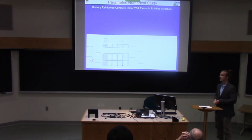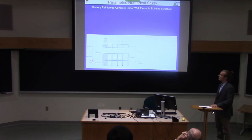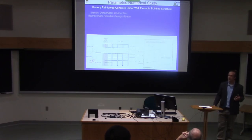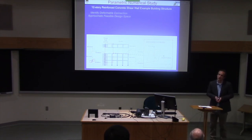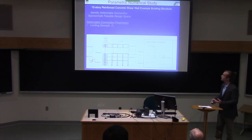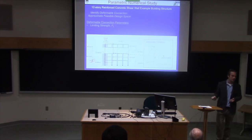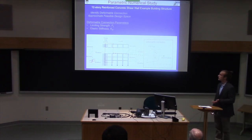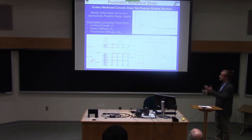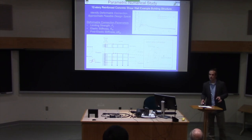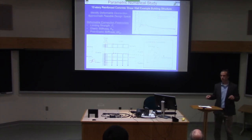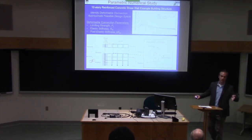The first step to create this physical embodiment was a parametric numerical study using a 12-story reinforced concrete shear wall example building structure, to identify the deformable connection's approximate feasible design space. Since this had not been done before, we had no prior knowledge of the required force level or stiffness level. We used 18 ground motions from FEMA P695, scaled to match the ASCE 7-10 design spectrum in the period range of 0.5 to 2 seconds.